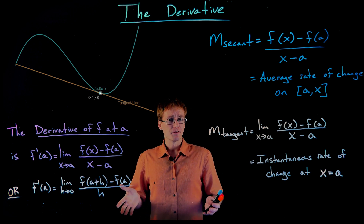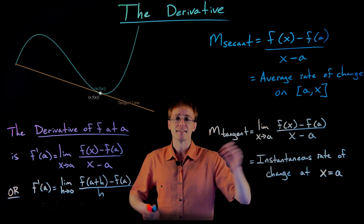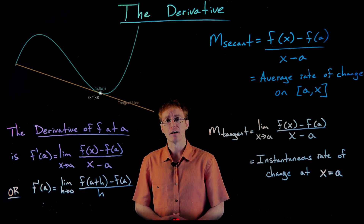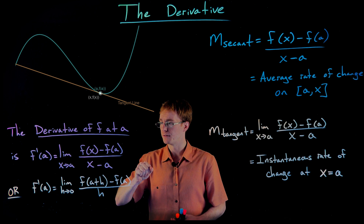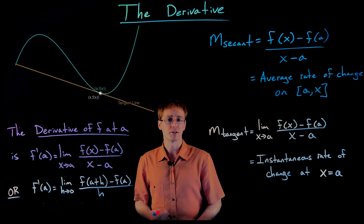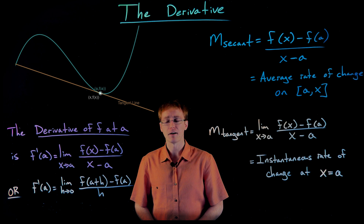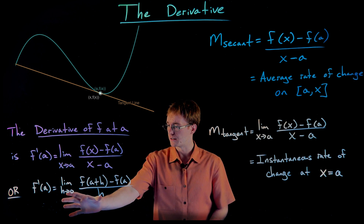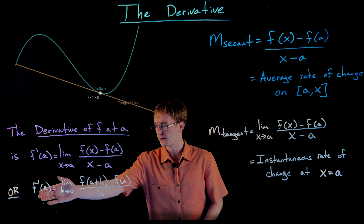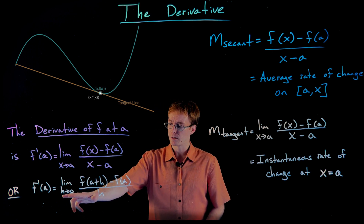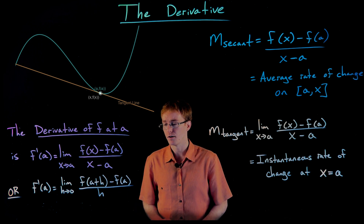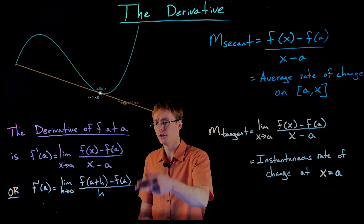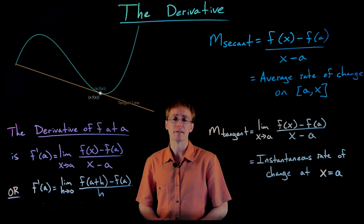In these next couple of videos, I'm going to be focusing on this definition of the derivative with the limit as x approaches a. But there is another way to formulate and find the derivative using a limit, using this approach: still f prime of a, our derivative, but we can write it as the limit as h approaches zero of f of a plus h minus f of a, over h. There really is no difference between these two limit definitions — one just might be a little bit easier to use than the other. So let's first make sure we understand that these two limit definitions are the same.